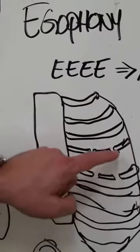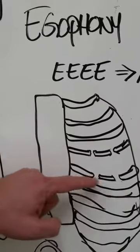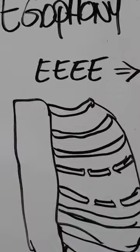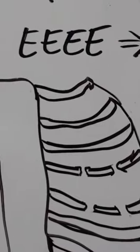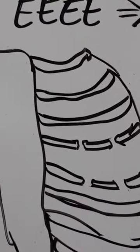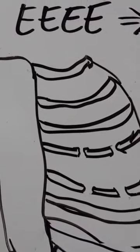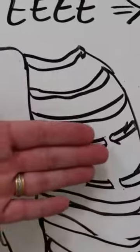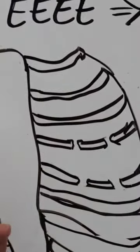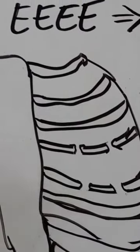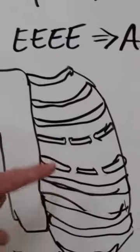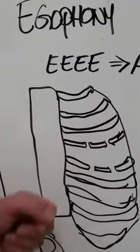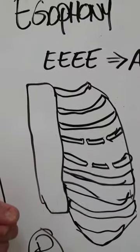The fractured segments here where you have more than one rib fractured in more than one place is called a flail segment. This would be denoted when you palpate the patient's chest wall or even visualize the patient's chest wall where a section of the ribs or the chest wall would be moving opposite the rest of the chest wall because it is not anchored. Again that is called a flail segment, more than one rib fractured in more than one place.